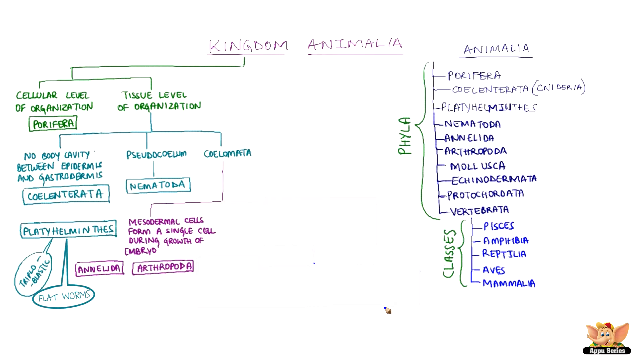Arthropod means jointed legs. Arthropods have a coelomic cavity which is blood-filled. This has the largest group of animals. Crabs, prawns, spiders, and all insects are familiar examples.